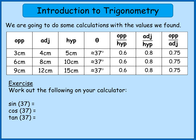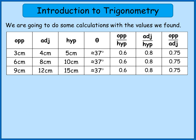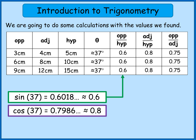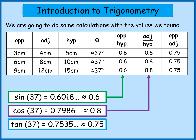Okay, welcome back. Hopefully you've managed to work those out. When you work out sin 37 it comes out as a long decimal — 0.6018 and more digits — which is quite close to 0.6, the value appearing in the opposite divided by hypotenuse column. Cos 37 gives you 0.7986, which rounds to 0.8 — matching the adjacent divided by hypotenuse column. And tan 37 comes out as 0.7535, which is fairly close to 0.75 — matching the opposite divided by adjacent column.